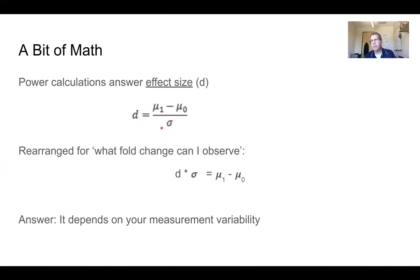Most of us don't think about effect size. Most of us think about what fold change can I observe or what difference between my two groups can I observe. If you do a little bit of math, you see that that is the effect size times the standard deviation. So if you think back a slide, you'll remember that each protein has a different standard deviation. That means that you will have a different observable change in means based on the standard deviation. So it depends on your measurement variability.